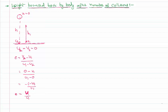So the coefficient of restitution can be written as v1 by u1. Using the kinematics equation, v1 can be written as root of 2gh1, and u1 can be written as root of 2gh. So the coefficient of restitution can also be expressed in terms of height as the height bounced after the first collision by the height from which the body has fallen freely. So I got a formula now: in the case of the first collision, e equals the square root of height bounced back divided by the height from which it has fallen.